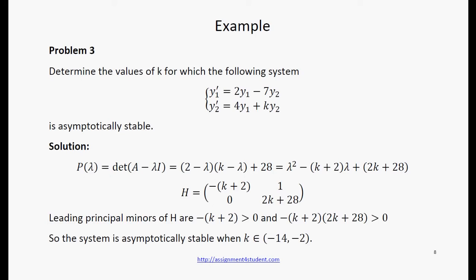In this case, matrix A is 2 minus 7 for K. Let P is a characteristic polynomial. It is defined by this expression. Hurwitz's matrix is determined in such a way. Leading principal minors of H are the following.